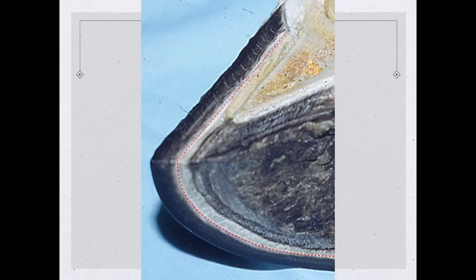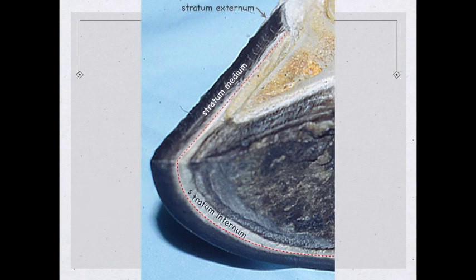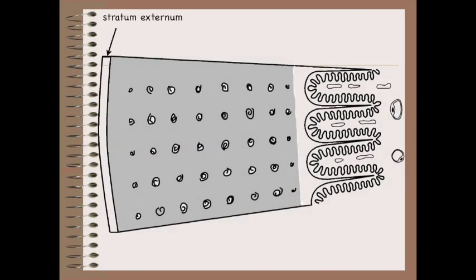If you've ever looked at the hoof wall you would see striations running through it — those striations are due to the tubular horn. The stratum externum is up here, the stratum medium makes up the bulk, and the dashed line is an estimate of where the stratum medium ends and the stratum internum begins. If you look closely you can see the lamina.